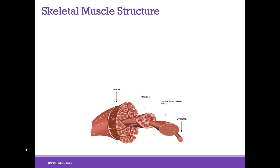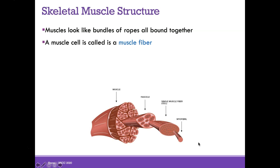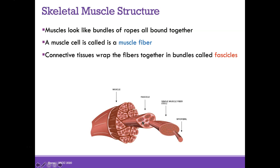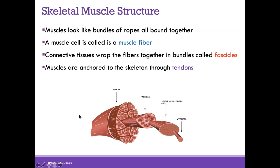Let's take a step back and review what we learned from chapter 10. Muscles are like bundles of ropes bound together. A single muscle cell is a muscle fiber, and those cells are wrapped together in bundles called fascicles. Muscles can be anchored to bones through tendons, which are made of dense regular connective tissue. There's also a coating on the outside of muscles made of dense irregular connective tissue called the epimysium.